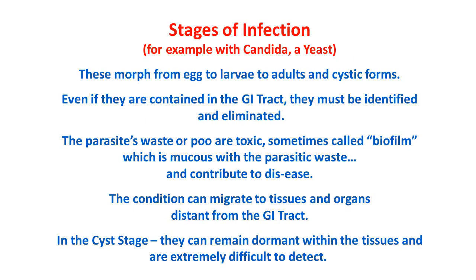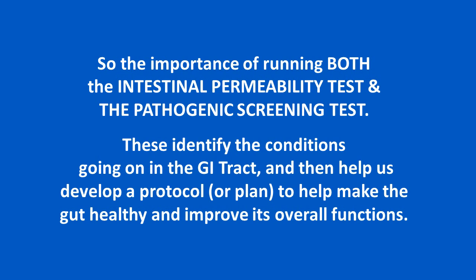A weak host can suffer severe consequences, including adverse changes in gut pH, the inability to break down food properly, retaining organisms that are normally rapidly expelled, disruption of the intestinal mucosal barrier, and toxic conditions from the metabolic waste created by the invaders. Using candida as an example, pathogens morph from egg to larvae to adults to cystic forms. Even if they are contained in the GI tract, they must be identified and eliminated. The parasite's waste, sometimes called biofilm, is a toxic mucus that contributes to disease. The condition can migrate to tissues and organs distant from the GI tract, and in the cyst stage can remain dormant within tissues, making them extremely difficult to detect.